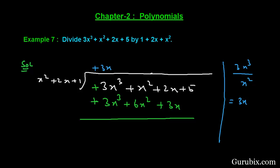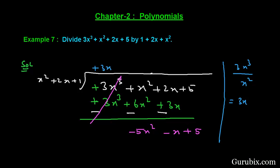To subtract, we change the sign of these values and cancel out the terms. After subtraction, the remainder gives us: −5x², −x, and +5.